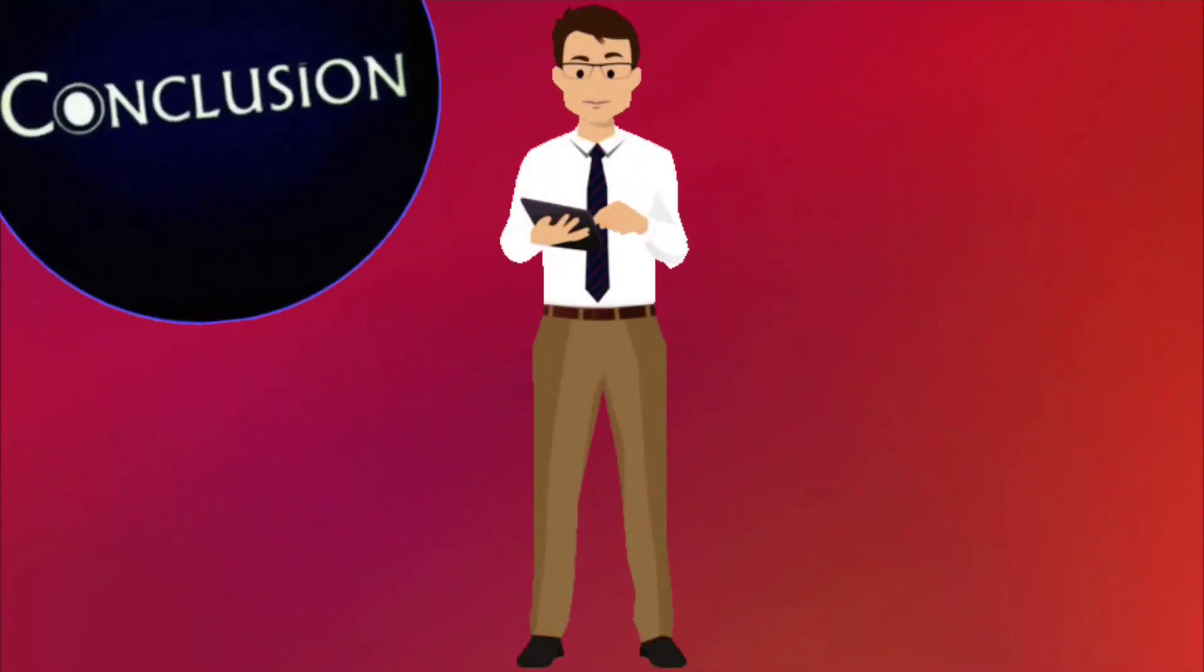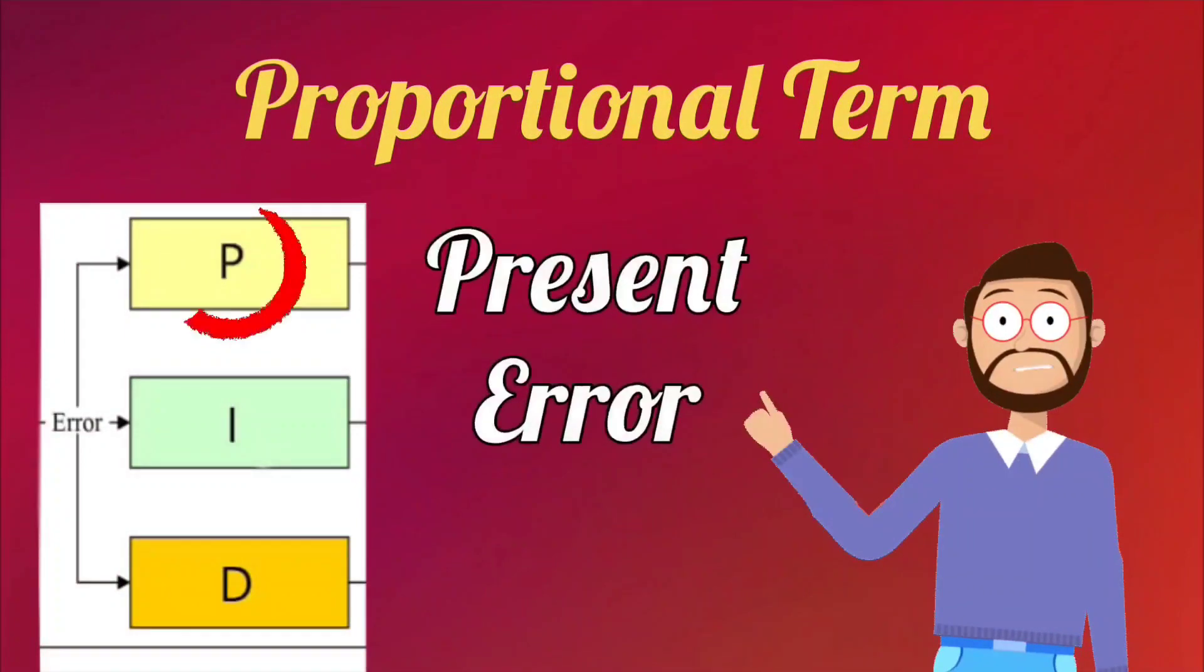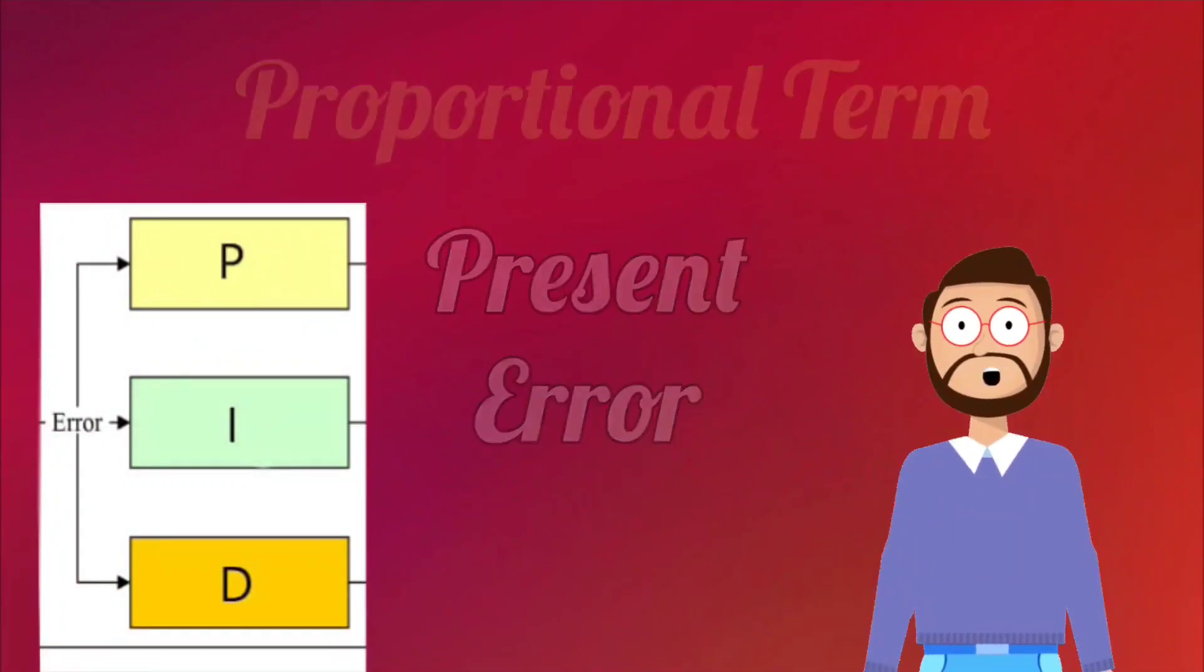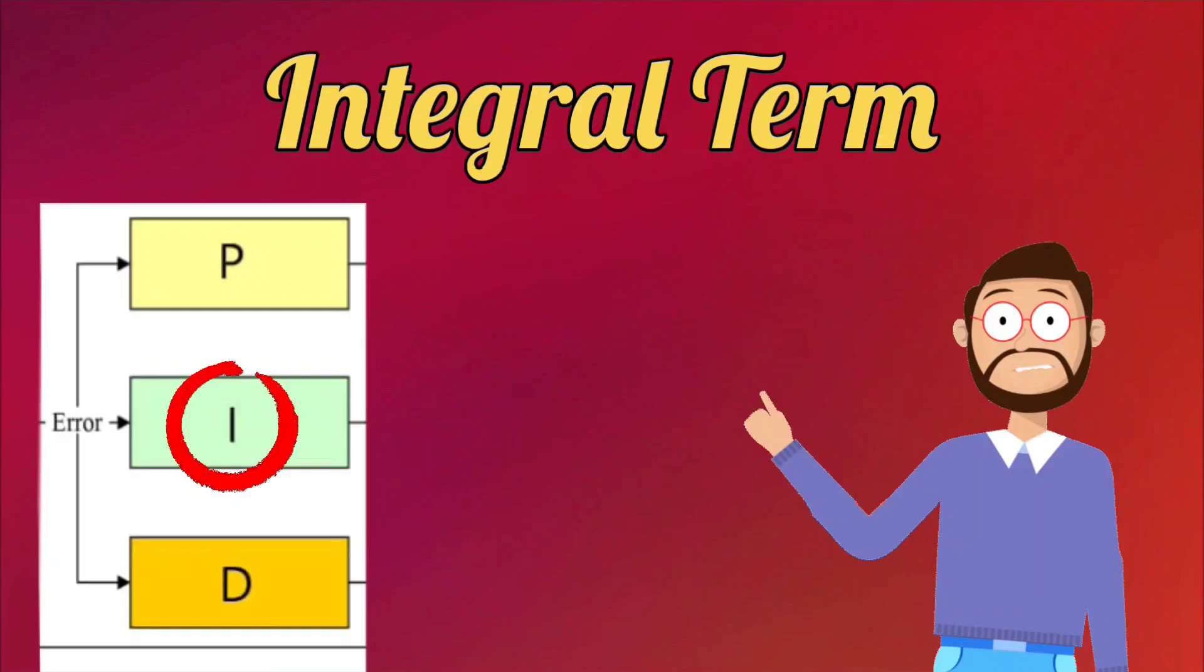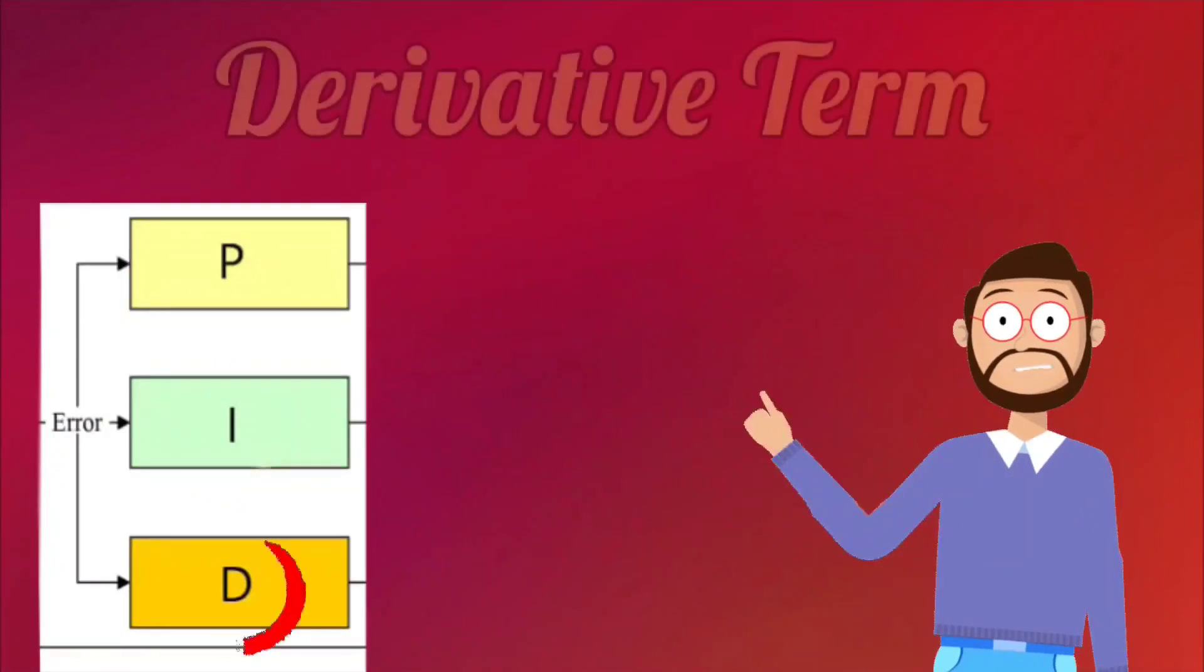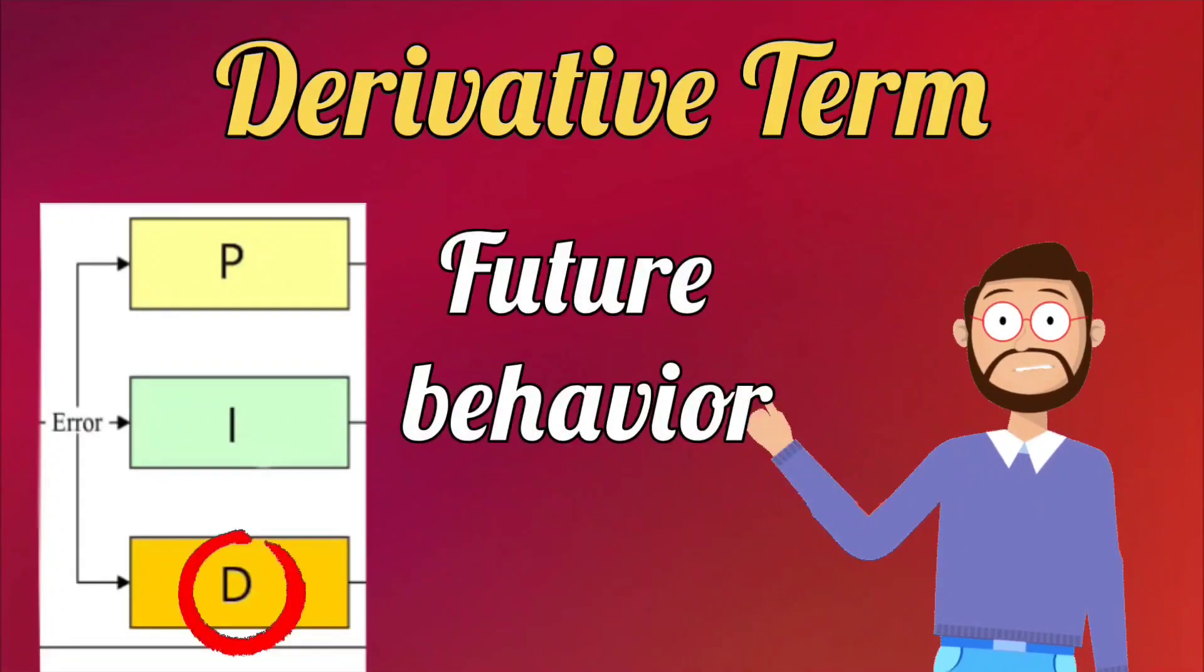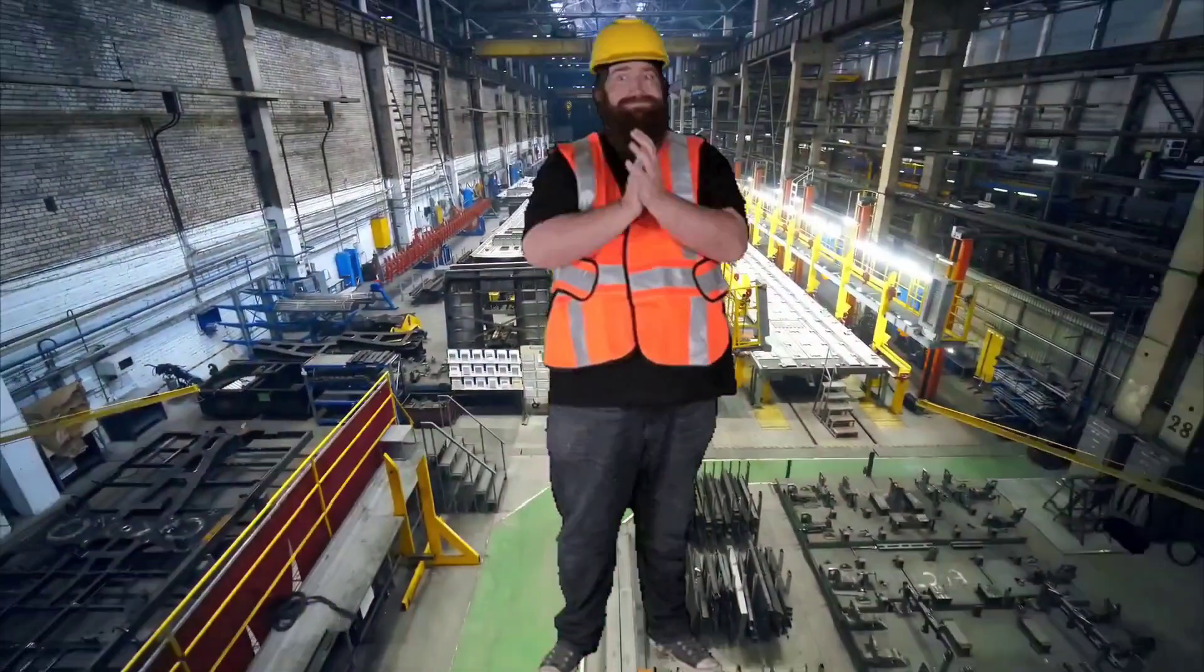So this conclusion came out from here, that proportional term depends on the present error. Integral term depends on past errors. And derivative term predicts future behavior of error. I think it is clear to you.